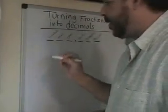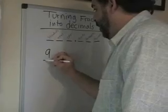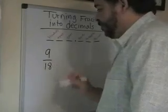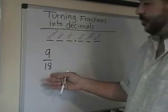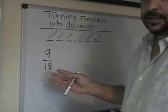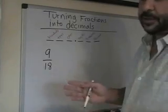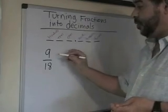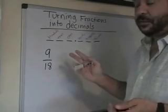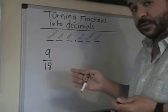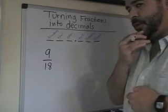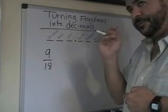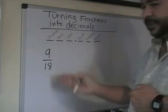Okay, we're going to try another example. This time we're going to try nine eighteenths. There's nothing I can divide or multiply with eighteen to get it to have a denominator of ten or hundred. So what I need to do is I have to reduce this to its simplest terms first. So I have to think of what is the biggest factor that I can divide into both of these.